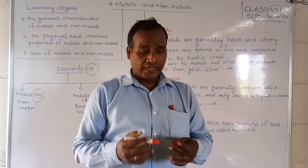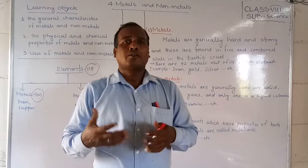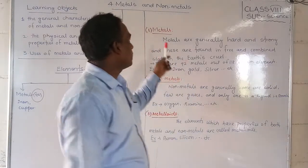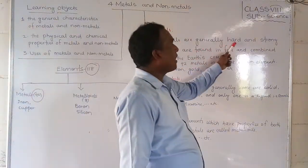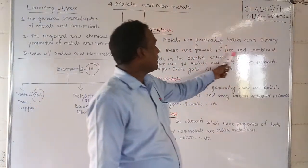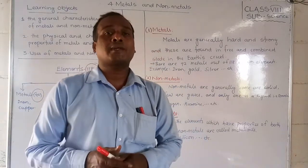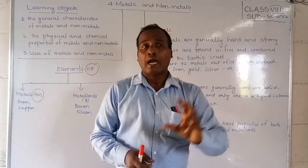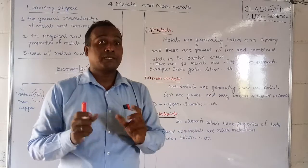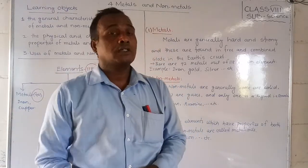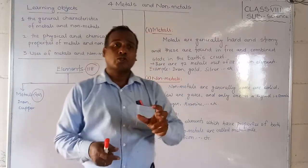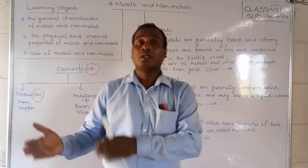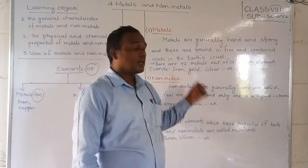What are metals? You have seen so many things made of iron, copper, and gold, which are very strong and cannot be broken easily — those solid substances are generally called metals. Metals are generally hard and strong, and they are found in both free state and combined state in the earth. For example, gold is found in free state because it does not react with other elements, which is why gold is one of the costliest elements.